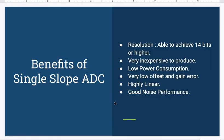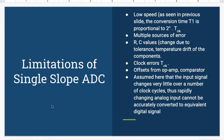Here are some of the benefits of the single slope ADC. The resolution is very high, we can achieve resolution up to 14 bits and more, inexpensive to produce, low power consumption, very low offset and gain error, highly linear, good noise performance.